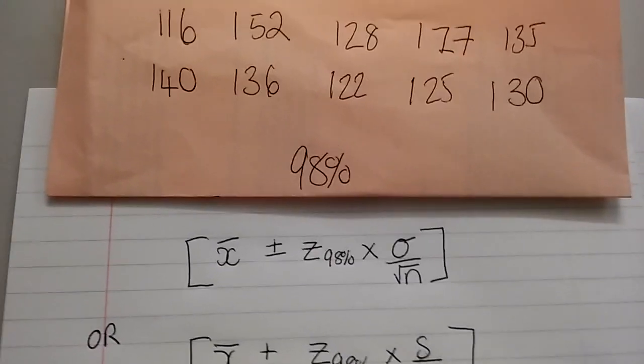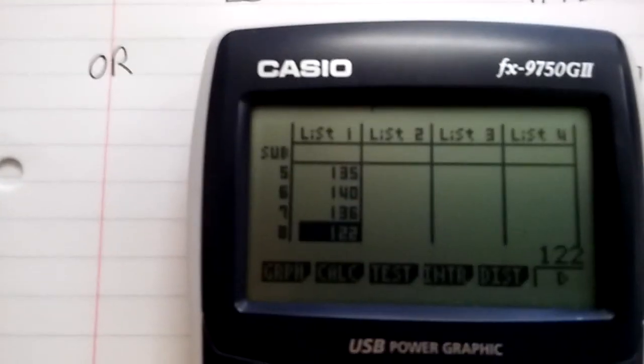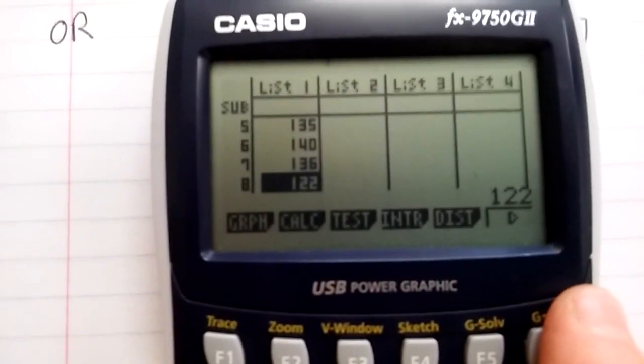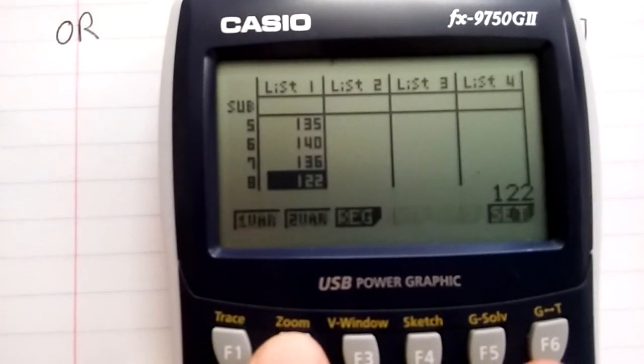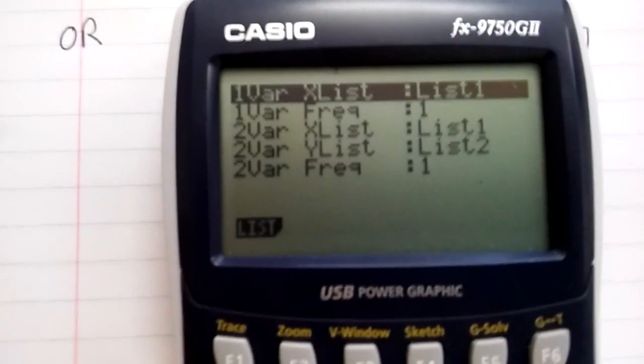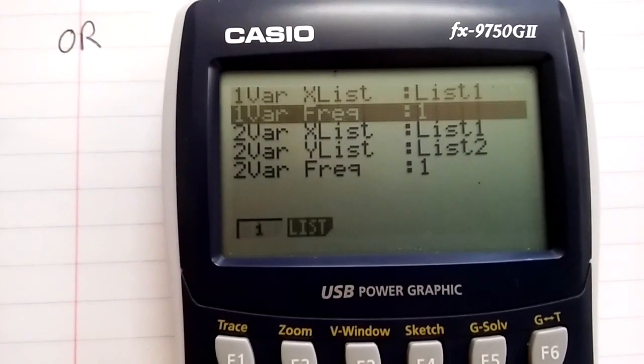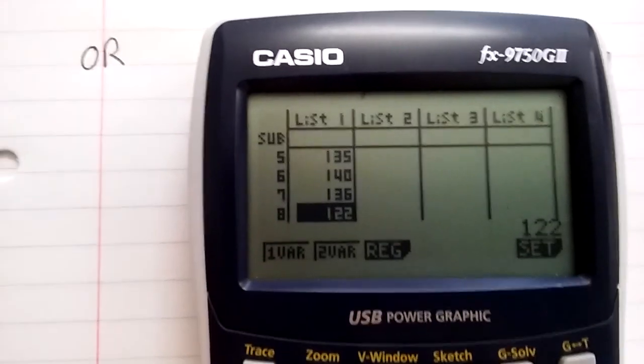But let's have a look on the calculator. So what we need to do is pop the values in. In list one, I've popped the values in. This is in stats mode. Now press calculate. Check the settings. It says X numbers are in list one. There's a frequency of one of each number. When you're happy, then press the blue button.